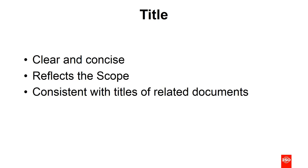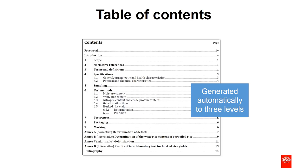The table of contents is generated automatically, so whatever you do in your draft has no bearing on the final PDF. It goes down to three levels; sub-clauses below that level do not appear. Lists of figures or tables are not included in the table of contents.